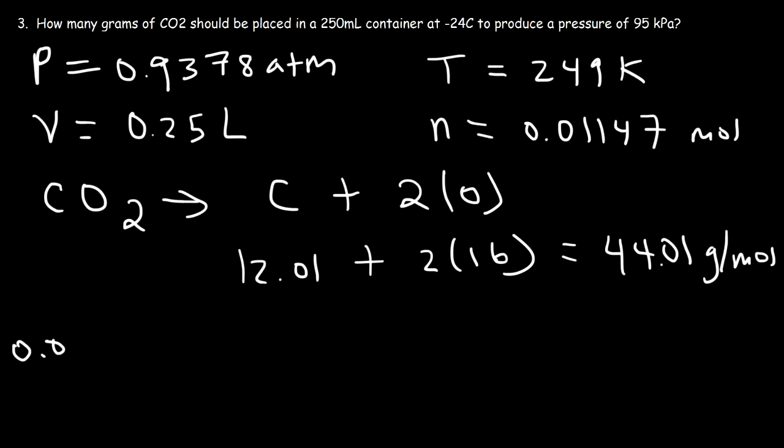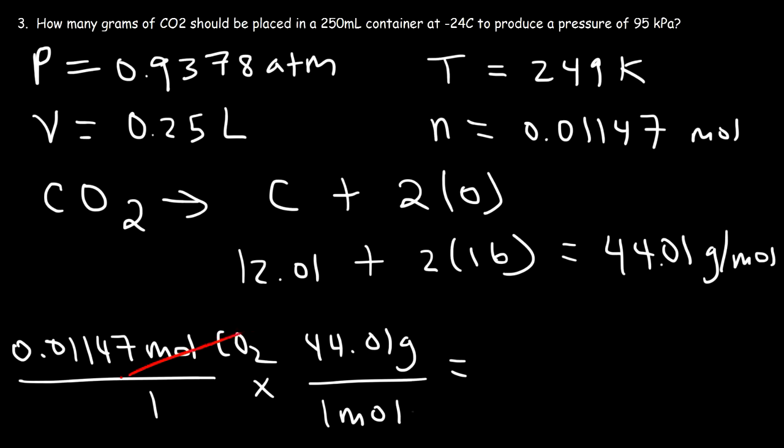So we have 0.01147 moles of carbon dioxide gas, and one mole of CO2 has a mass of 44.01 grams. So we just got to multiply 44.01 by 0.01147, and so this is equal to 0.505 grams of CO2. And so that's the answer.